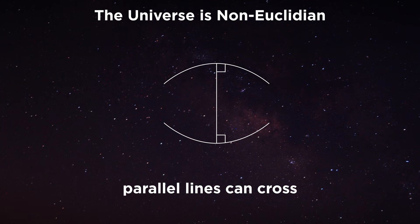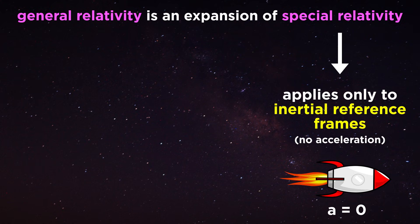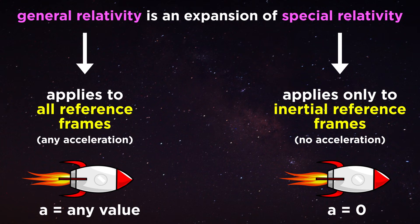Parallel lines can indeed cross if they move through curved spacetime. Einstein derived this theory in an attempt to expand special relativity, which applies only to inertial reference frames, to include all reference frames, which is why it is called general relativity.